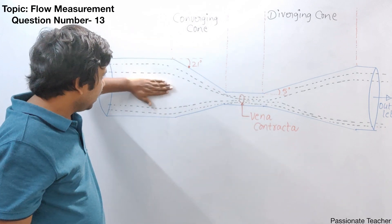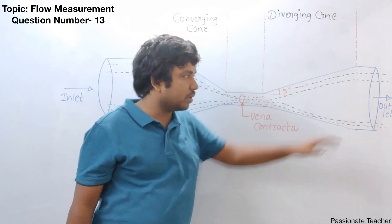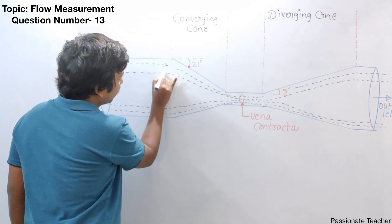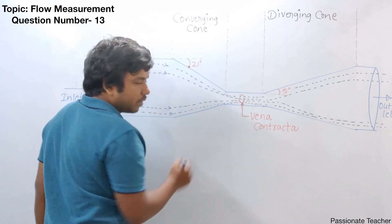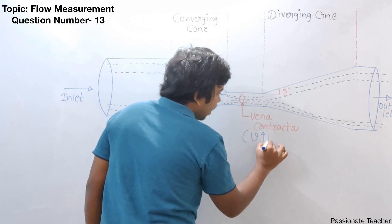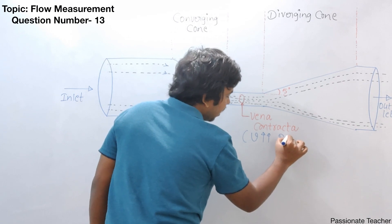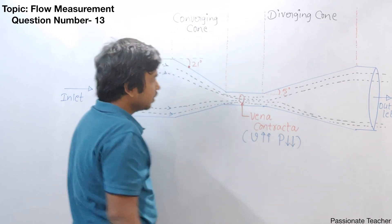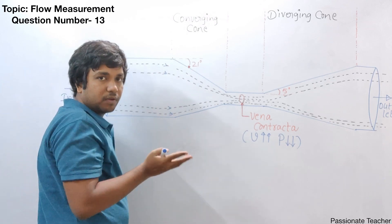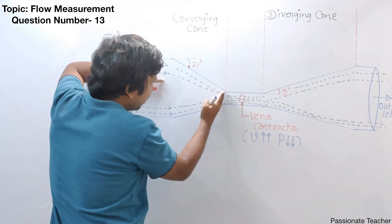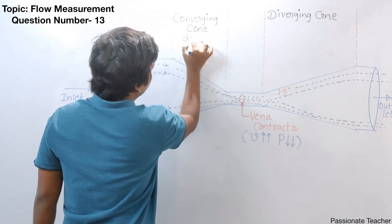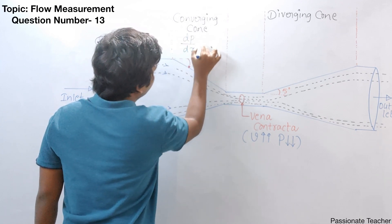During the converging cone, as the area is very high up to that point, velocity is less and pressure is high. When the converging cone starts, slowly the liquid loses its pressure. That's why during the converging cone, the pressure gradient — that is, dp/dx — is indicated as a negative quantity. The reason is, when the fluid is moving in the x direction linearly during this zone, the pressure change will be negative, so it loses pressure.